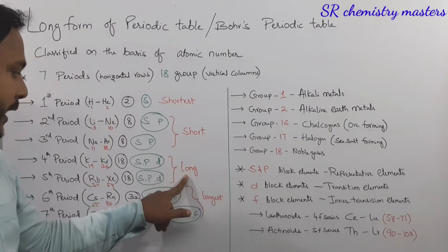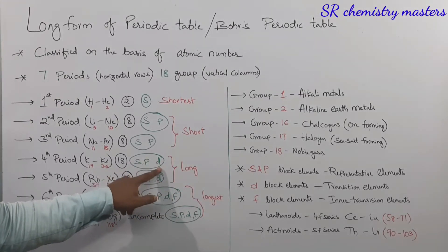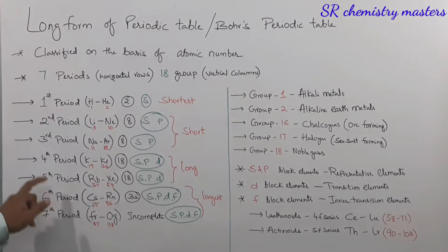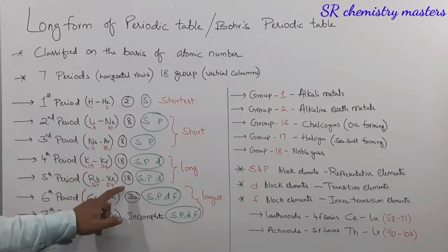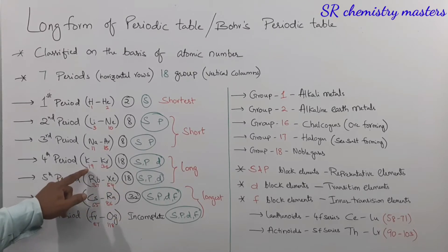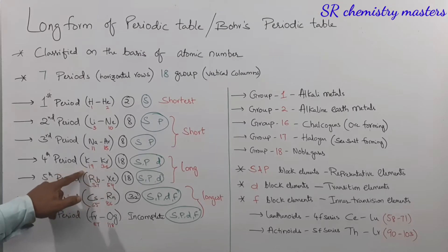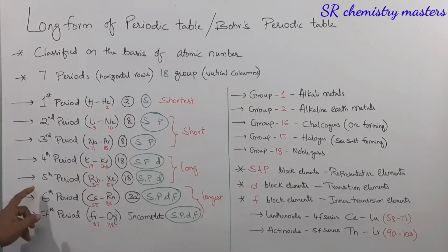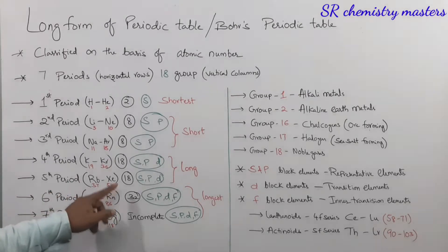The fourth period and fifth period are considered as the long periods, as we have elements from s, p, and d blocks in these periods. The fourth period consists of 18 elements, from potassium to krypton, that is atomic numbers 19 to 36. The fifth period also consists of 18 elements, from rubidium to xenon, that is atomic numbers 37 to 54.